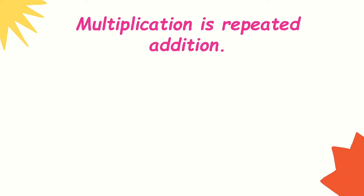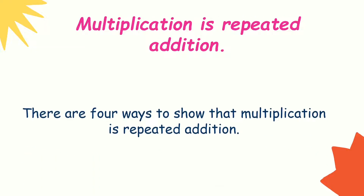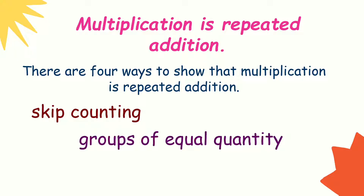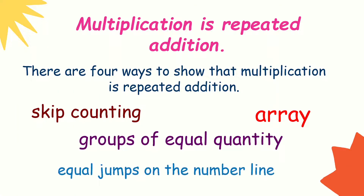Multiplication is repeated addition, and we can show this through the following ways. There are 4 ways to show that multiplication is repeated addition: we can use skip counting, groups of equal quantity, array, and equal jumps on the number line.